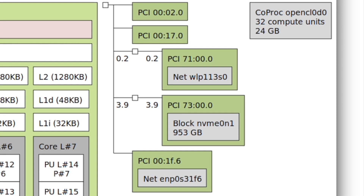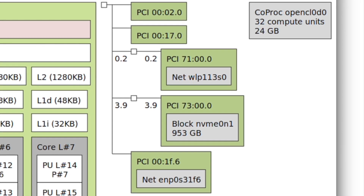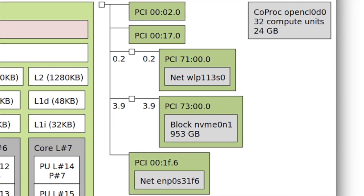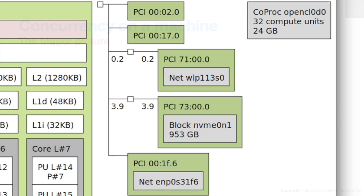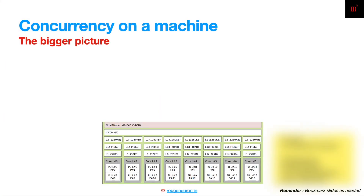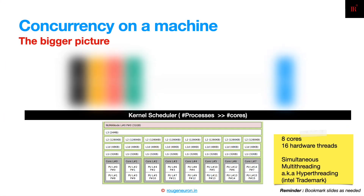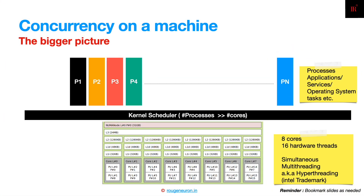This is a logical view of one hardware system — my machine. Adding the operating system to the equation makes the whole system look different: at the bottom is the hardware we just discussed — eight cores, 16 hardware threads — and above that is the kernel scheduler.